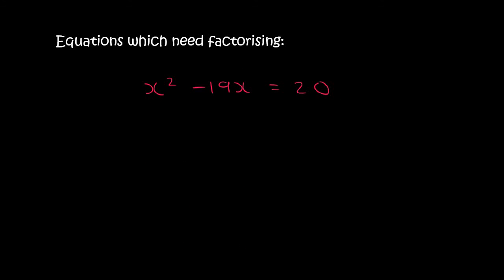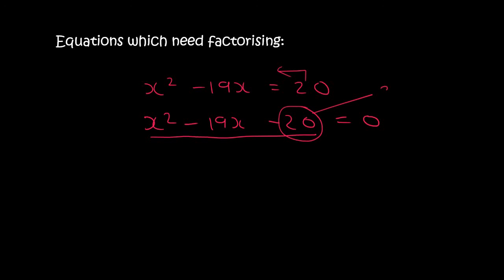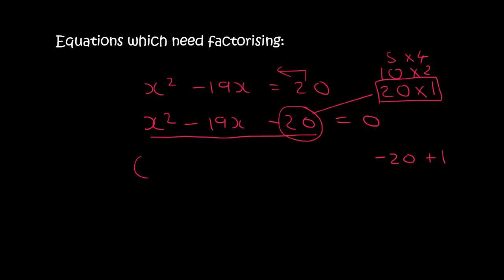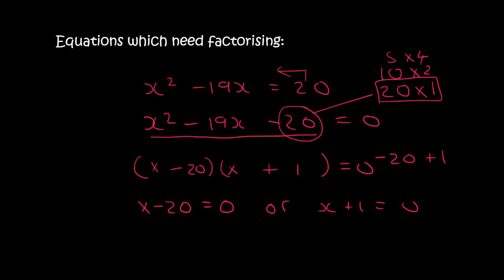Here I have an x squared that does not cancel out, so I must take everything to one side — that is very important. It became minus 20 when you move it over. Then I see that this is a trinomial, so I look at 20: that's 20 times 1, 10 times 2, or 5 times 4. 20 and 1 can make minus 19 by saying minus 20 plus 1. So we open up two brackets: x and x, minus 20 and plus 1. Then x minus 20 equals 0 or x plus 1 equals 0, giving x equals 20 or x equals minus 1.